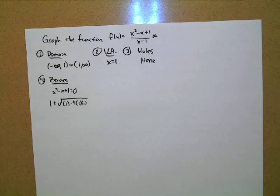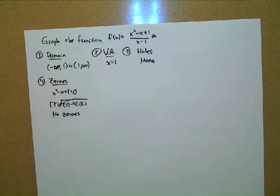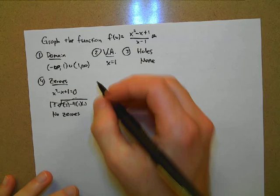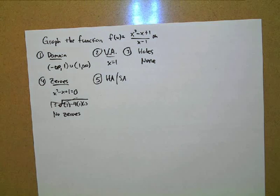Don't give up just because you can't factor the numerator — always check the quadratic formula in case there are irrational zeros. Elizabeth, do we have a horizontal asymptote here? No — it's a slant asymptote, because the degree on top is one greater than the degree on bottom. We find the slant asymptote using synthetic division: put 1 in the box with coefficients 1, -1, 1.